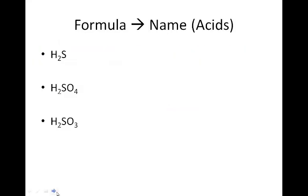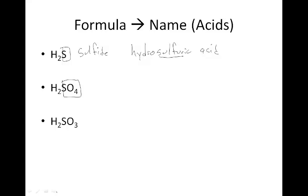Let's name these. H₂S — sulfide — if it's -ide, it is hydro-, now I need the stem: sulfuric acid. Notice it's sulfur and sulfuric: hydrosulfuric acid. SO₄ is sulfate, which turns into sulfuric acid. Then SO₃ is sulfite, which is -ite, so it becomes -ous: sulfurous acid.